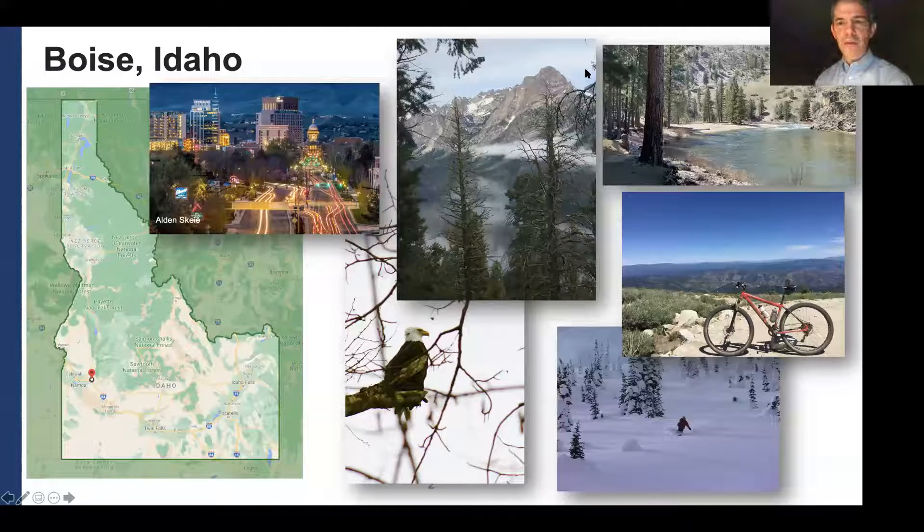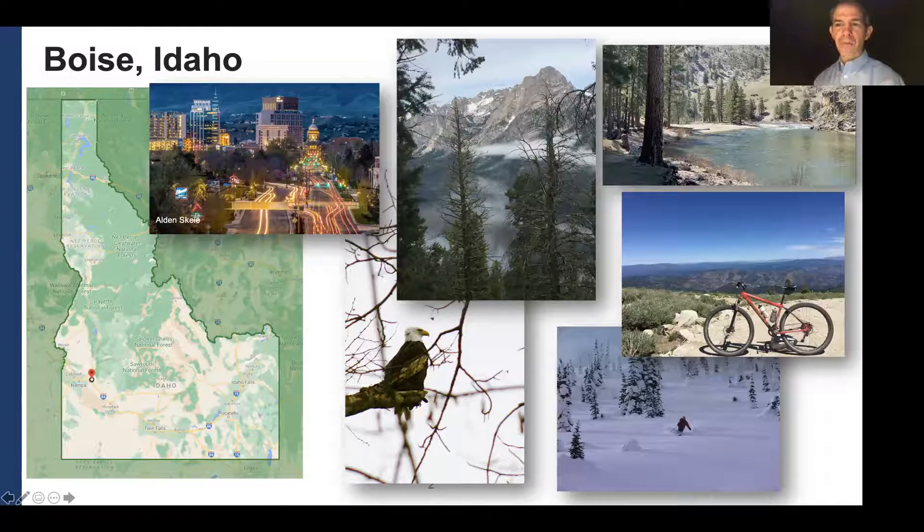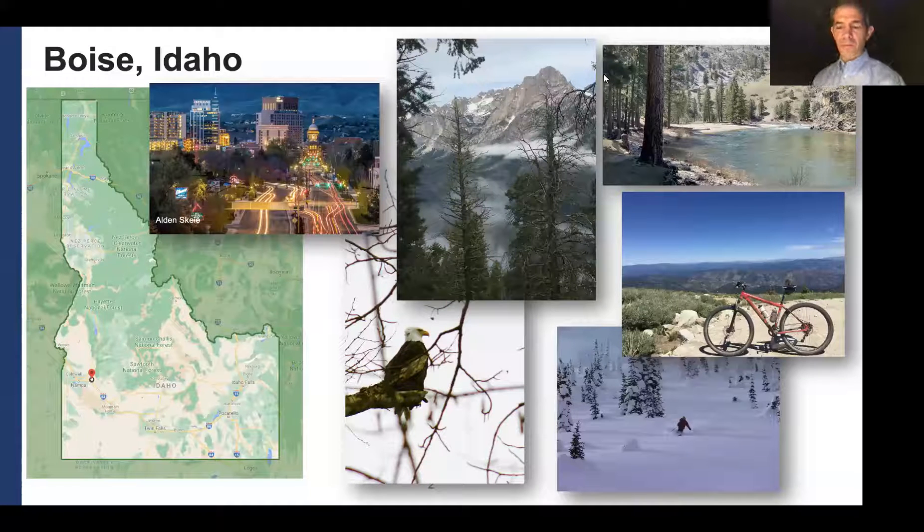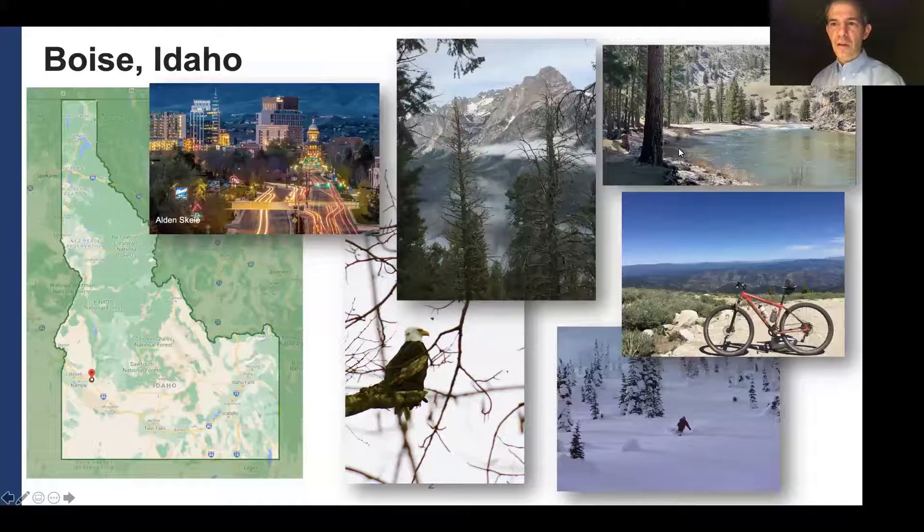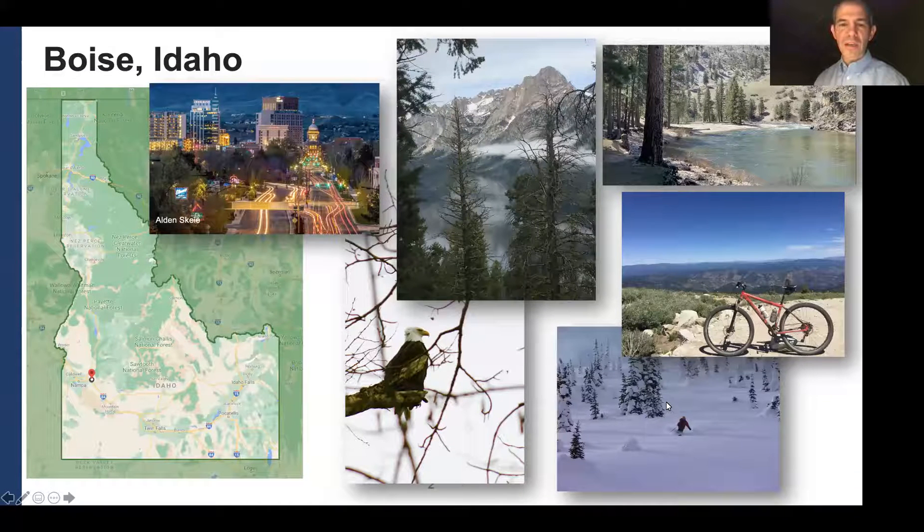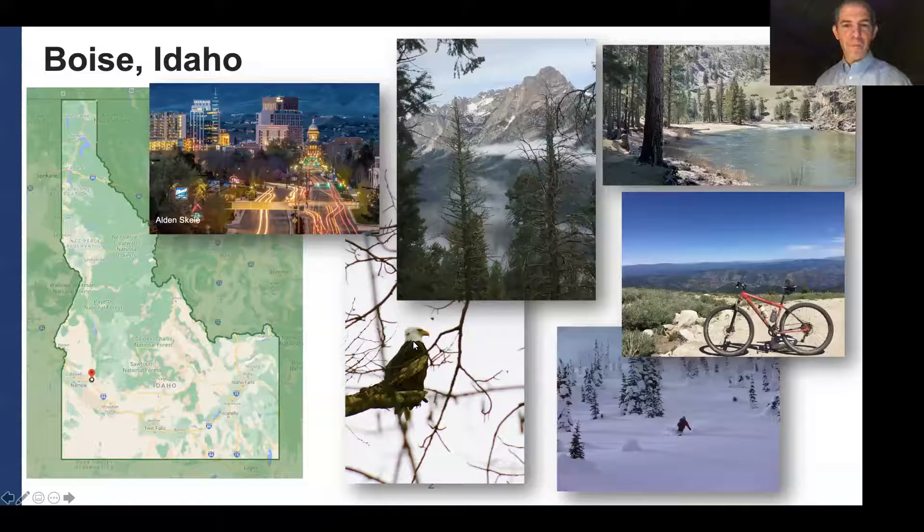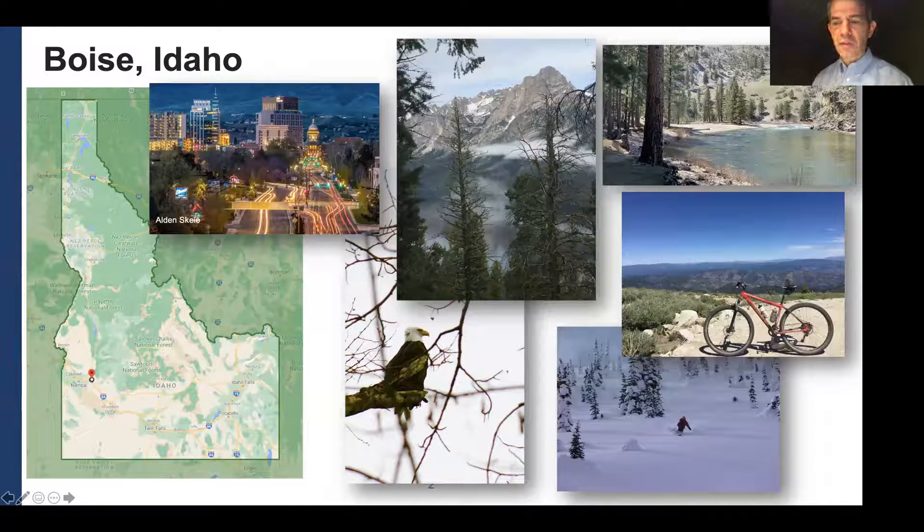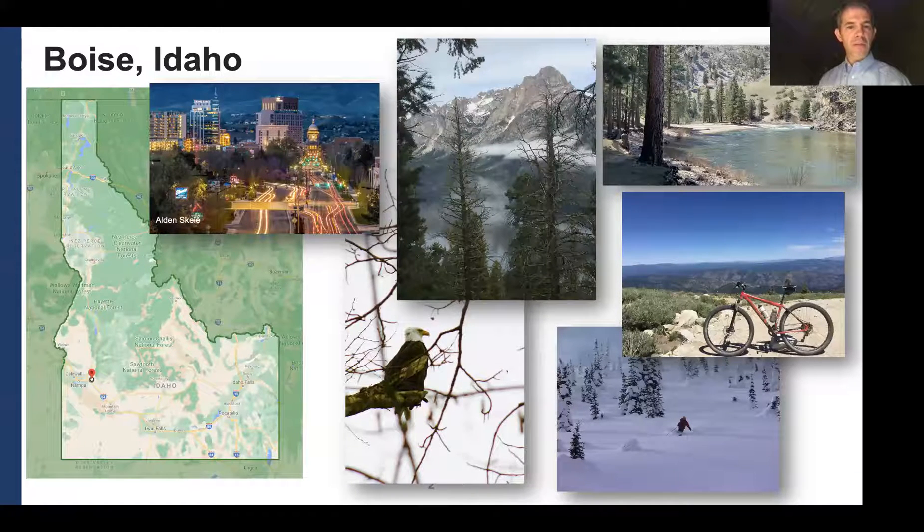The Sawtooth National Forest is kind of, this is the Sawtooths here. It's kind of like the Grand Tetons, but without any people there. So there's lots of outdoor activities, lots of great areas to explore. And so this is, I just took this photo here last weekend, about 20 miles from my house. Lots of outdoor activities, lots of mountain biking, skiing. This bald eagle I took on my way to work along the Boise River. So it's, if you're into the outdoors and natural, you know, I think 60% of the state is federally protected land of some sort. So lots to explore here.